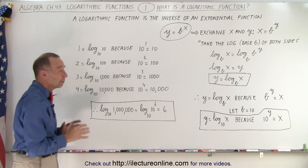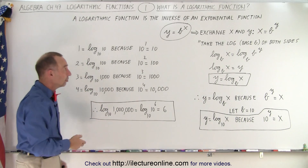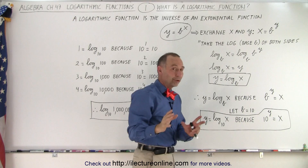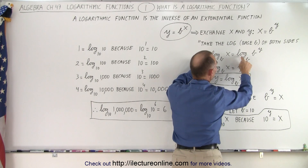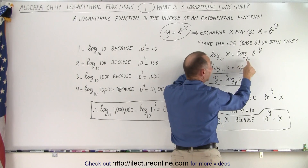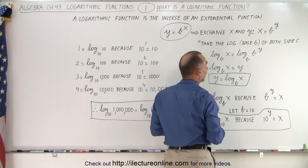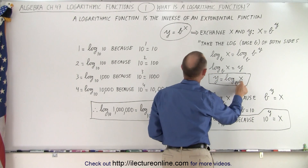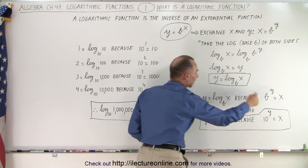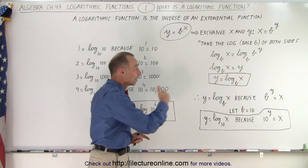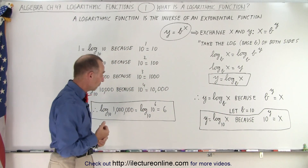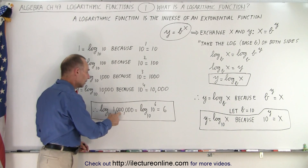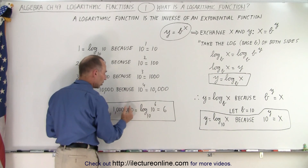And that is what we mean by a logarithmic function. Again, it's the inverse of an exponential function. We get the inverse by exchanging x and y, then solve for y by taking the log of both sides. On the right side, when we take the log base b of b to the y, we get y. And on the left side, we get the log of x. Turn it around: y equals log base b of x, because y equals b to the x. When we take the log of some base of a number equal to the base raised to an exponent, that exponent is what the logarithmic function equals.